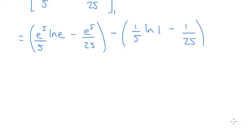But what does that simplify to? ln of e is just 1, so we get e to the 5 over 5 minus e to the 5 over 25. ln of 1 is 0, so that's nothing, and then we've got minus minus 1 over 25, so that's plus 1 over 25.